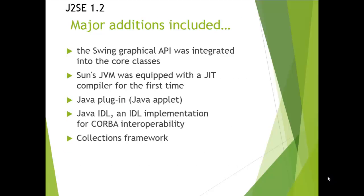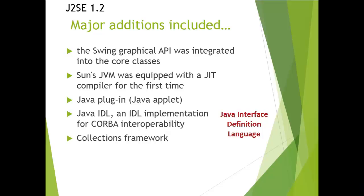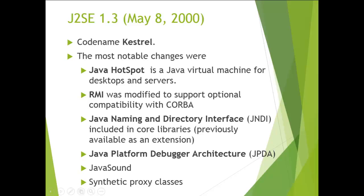The major additions in J2SE 1.2 include: Swing graphics API introduced into the core classes, the JVM equipped with a JIT compiler for the first time, Java Plugin (Java Applets), Java IDL (Interface Definition Language), an IDL implementation for CORBA interoperability, and the Collections Framework.